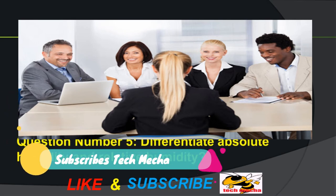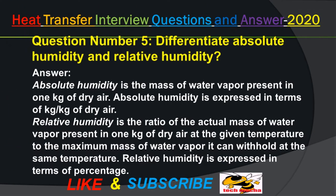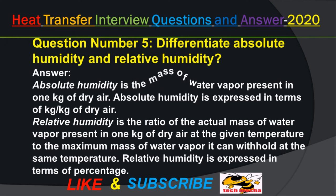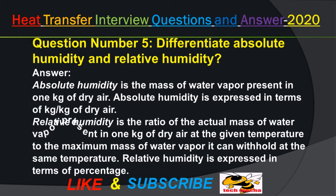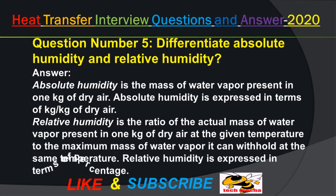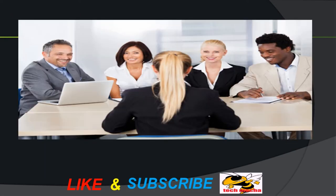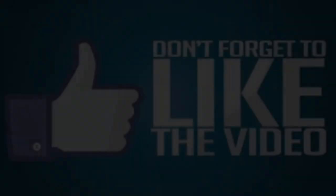Question number 5: Differentiate absolute humidity and relative humidity? Answer: Absolute humidity is the mass of water vapor present in 1 kg of dry air, expressed in terms of kg/kg of dry air. Relative humidity is the ratio of the actual mass of water vapor present in 1 kg of dry air at the given temperature to the maximum mass of water vapor it can withhold at the same temperature.